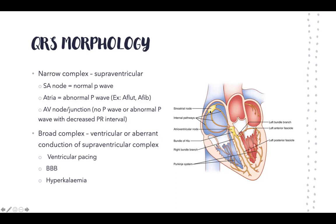The standard origin is the SA node, which conducts the atria, gives off a normal P wave, then goes to the AV node and depolarizes the ventricles appropriately, giving a narrow complex. Sometimes signals can originate from other parts of the atria — not necessarily the sinoatrial node — such as in atrial flutter or atrial fibrillation, giving an abnormal P wave. However, it still conducts through the AV node and depolarizes the ventricles appropriately, giving a narrow complex.